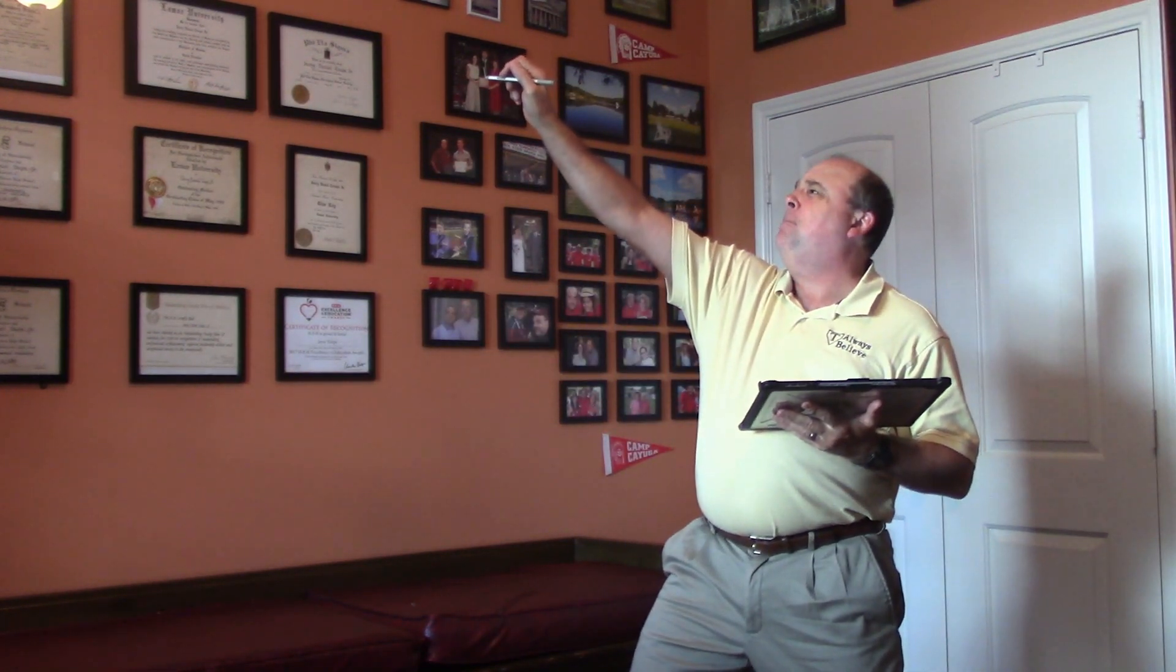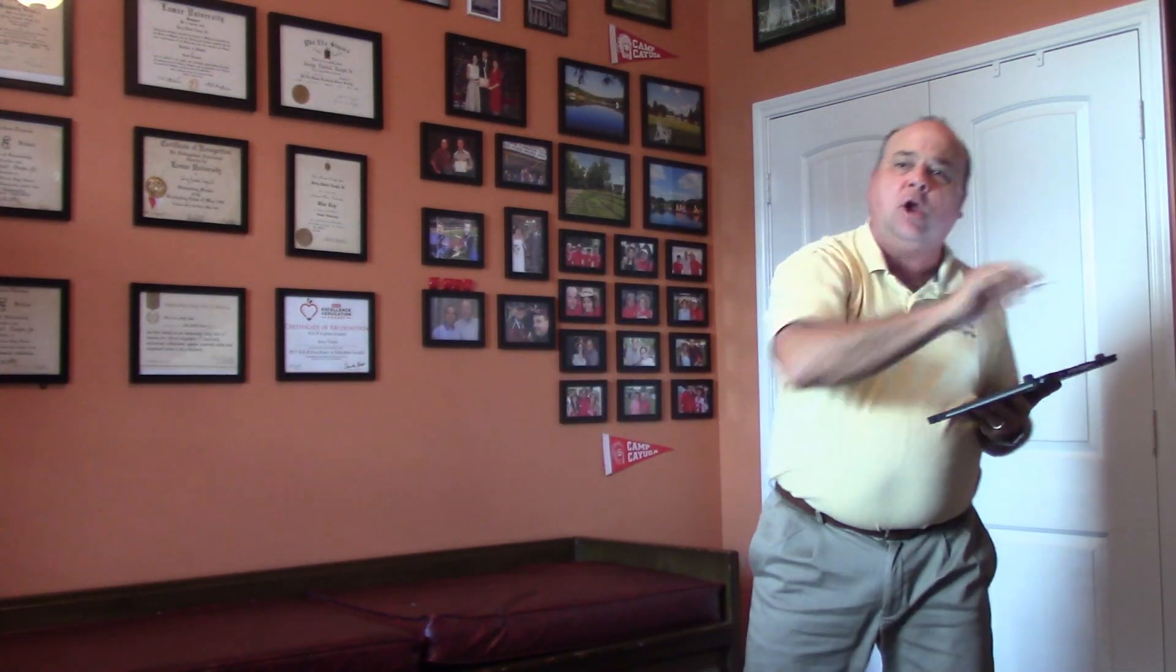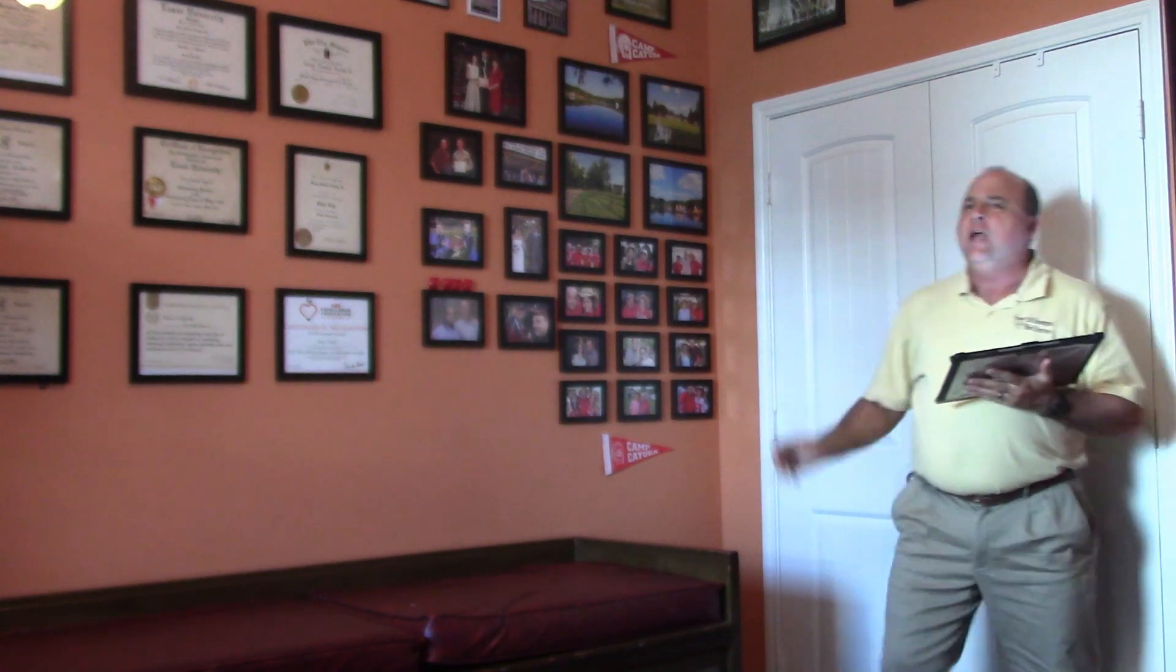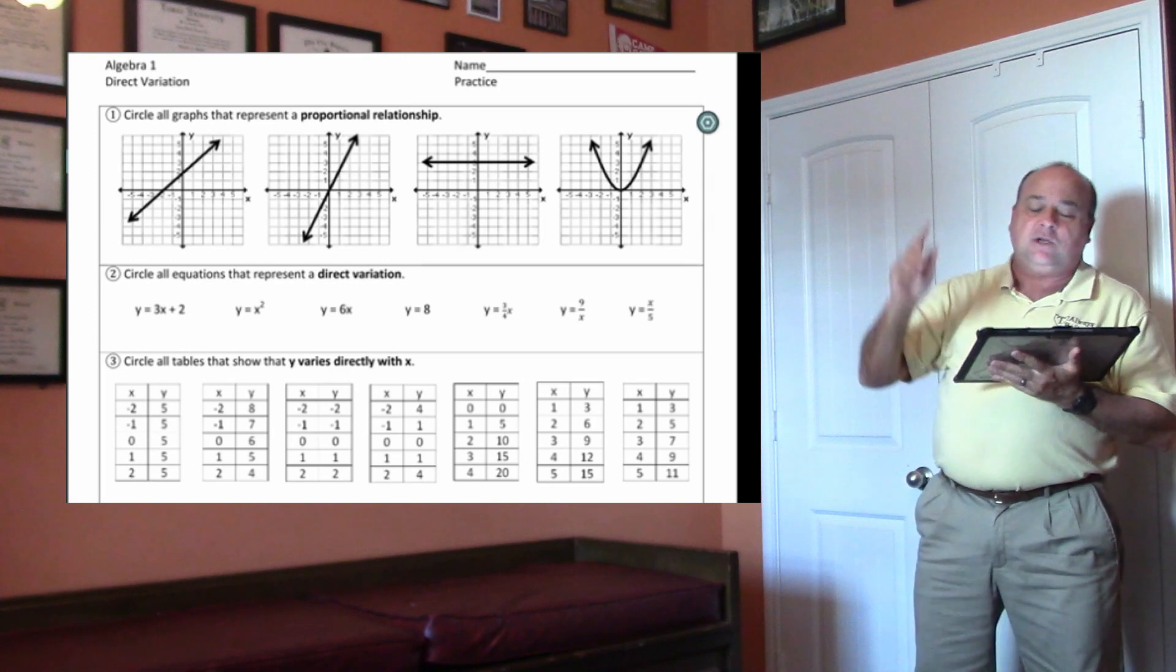Hello, it's Mr. Toops, the Jedi of Believe, and you're here in the office of the Always Believe House. Now we're going to do your direct variation lesson one homework. I'm not going to do all these because I don't want to eat all your Oreo cookies. So let's get rocking and rolling, and a magical whiteboard appears, and we're going to do these homework problems.